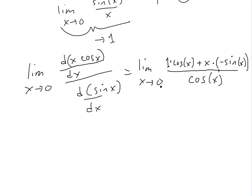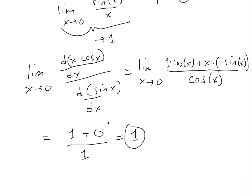Now we can plug in zero since we no longer have a zero-over-zero issue. We get: cos(0) equals one, and x·sin(0) equals zero times zero which is zero, so the numerator is one plus zero equals one. The denominator is cos(0) which equals one. So we get one over one, which equals one. This is a quick and easy method.